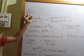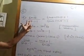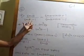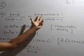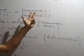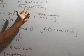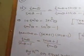Example number 12, question number 6: prove that tan θ upon sec θ minus 1 equals tan θ plus sec θ plus 1 upon tan θ plus sec θ minus 1.